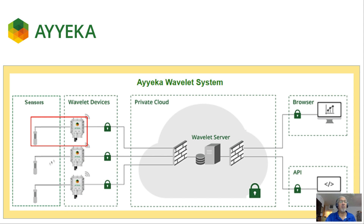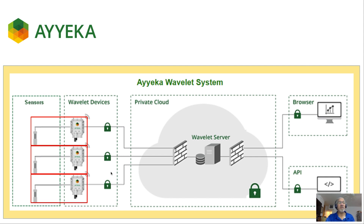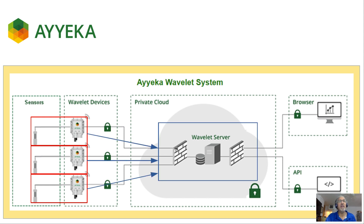The wavelet powers up the sensor at a user-defined frequency, which we refer to as the sampling rate, takes the data that is measured by the sensor, stores the data internally, and waits for the next transmission cycle for it to transfer the stored sensor data to the server. To do this, the wavelet powers up its internal cellular modem, attempts to connect to the best cellular network provider in the area, and then transmits the data to the server.